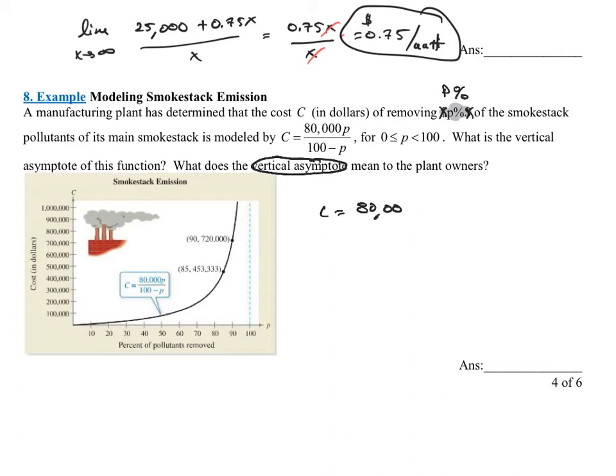Okay, so where's the vertical asymptote of this? Well, if I look at this function, 80,000P over 100 minus P, that is already simplified. Nothing can happen. So what I care about is when is that denominator equal to 0? In other words, when is this function undefined? So this says 100 equals P. When we solve this, our vertical asymptote would be P equals 100.